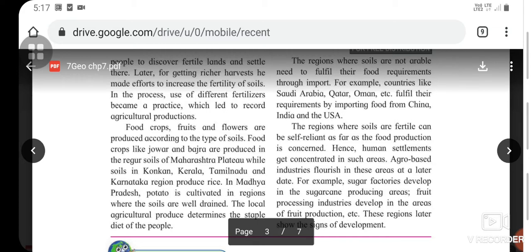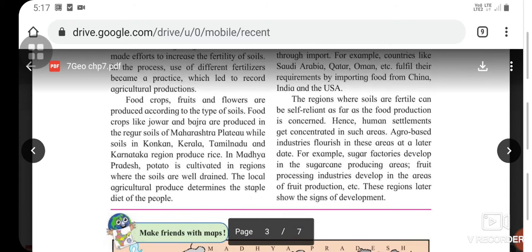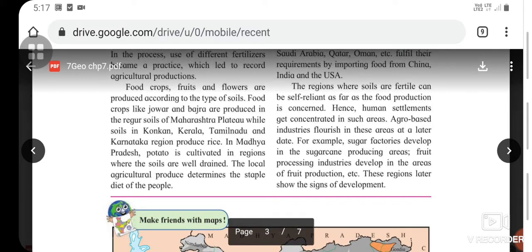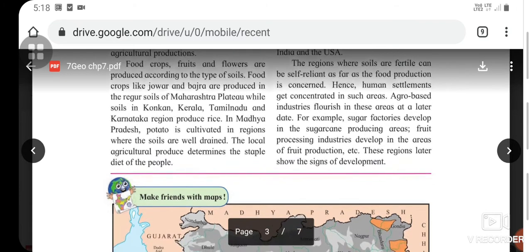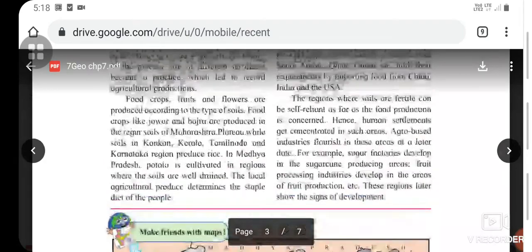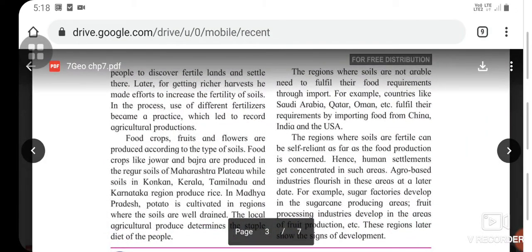Food crops like jowar and bajra are produced in the regur soils of Maharashtra plateau, while soils in Konkan, Kerala, Tamil Nadu, and Karnataka regions produce rice. In Madhya Pradesh, potato is cultivated. In regions where soils are well drained, the local agricultural produce determines the staple diet of the people. Regions where soils are not arable need to fulfill their food requirements through imports, for example countries like Saudi Arabia, Qatar, and Oman.